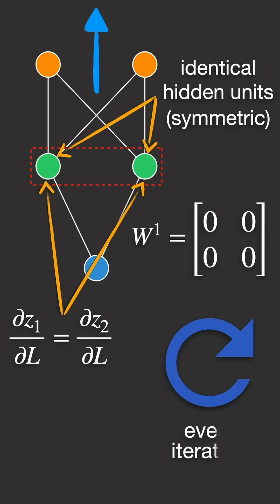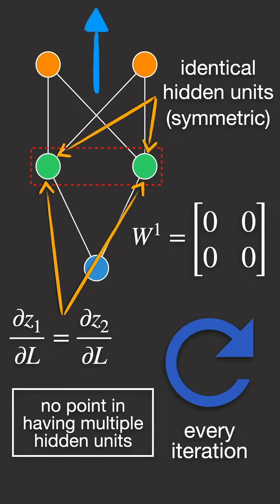By induction, after every training iteration, both hidden units continue computing exactly the same function. This means there's no point in having multiple hidden units as they are all redundant.